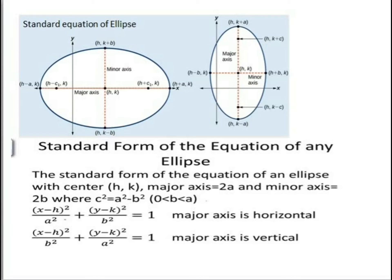The midpoint of the line segment joining the foci is called the center of the ellipse. The line segment through the foci of an ellipse is called the major axis. The end points of the major axis are called the vertices of the ellipse. The line segment through the center and perpendicular to the major axis is called the minor axis.